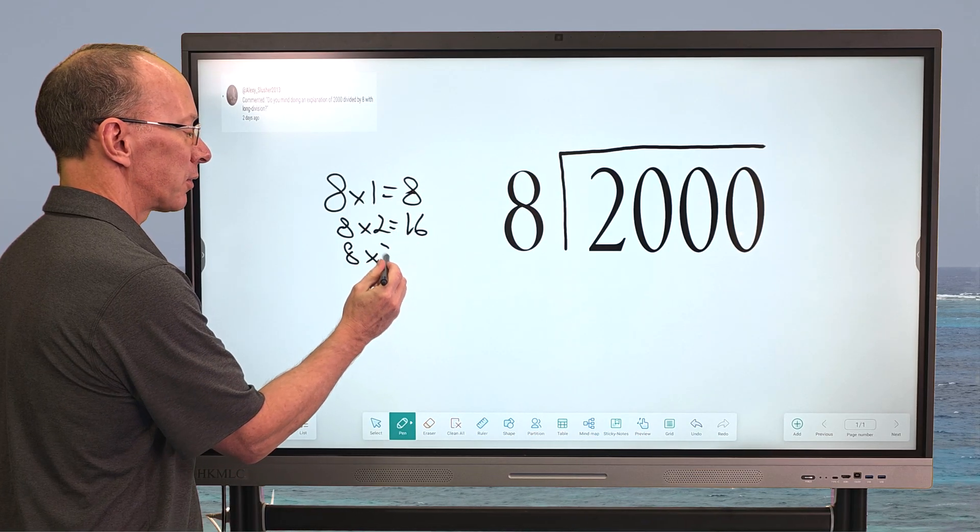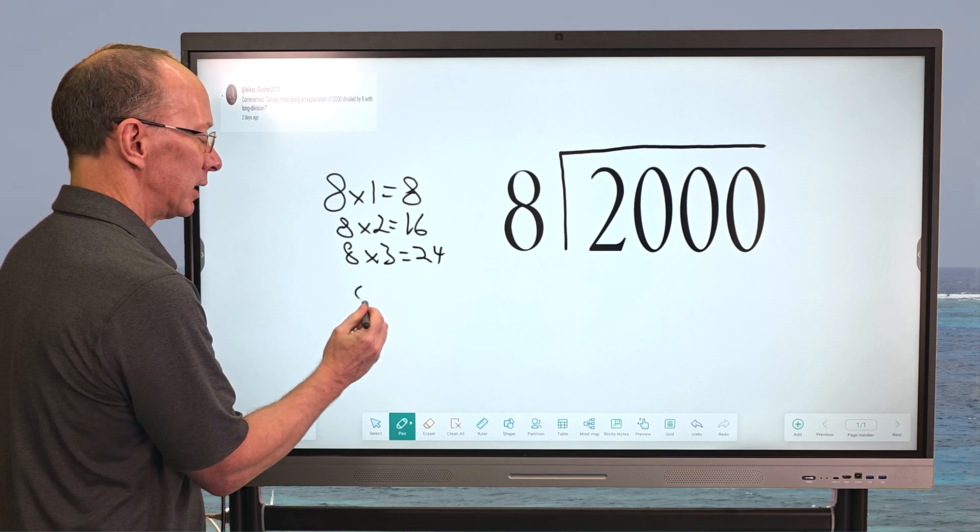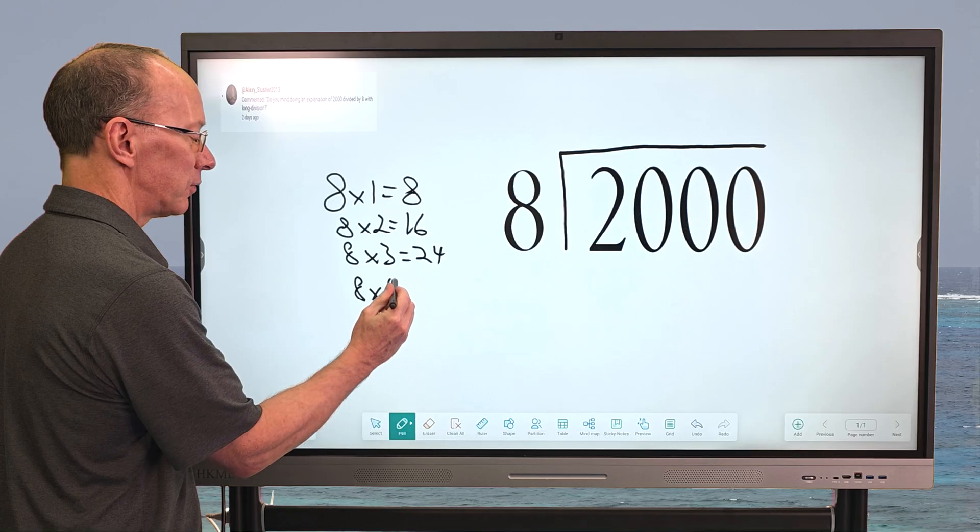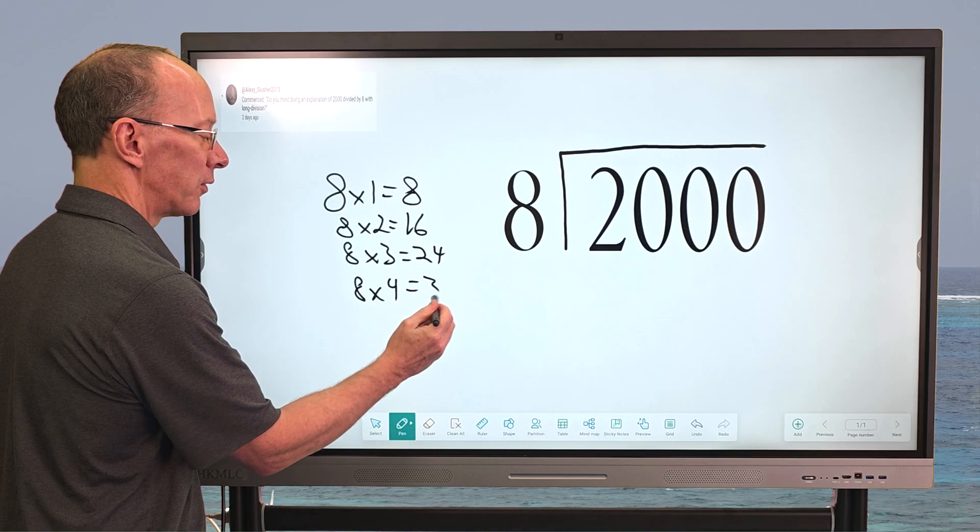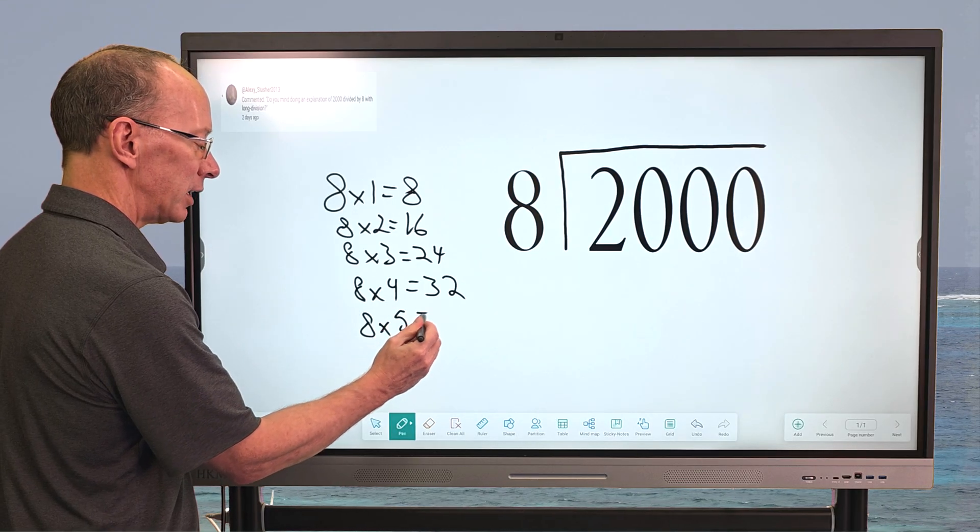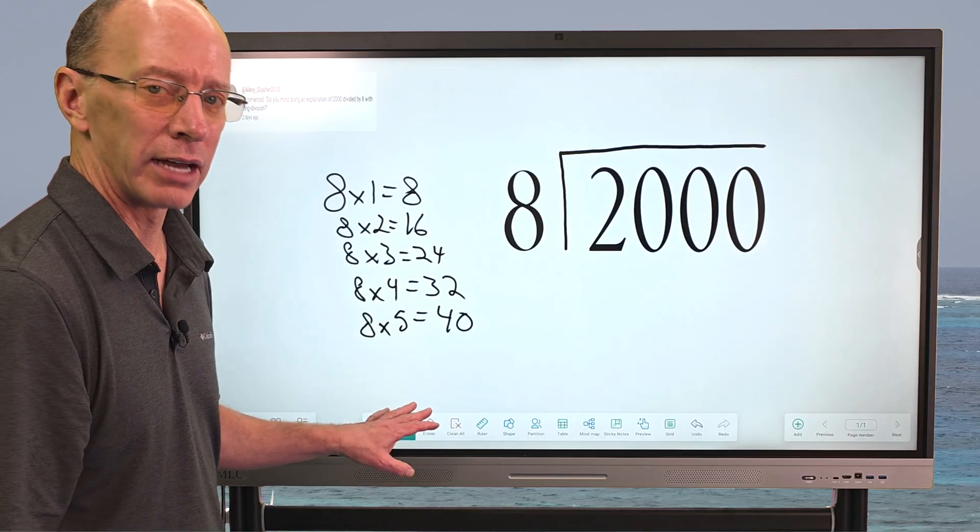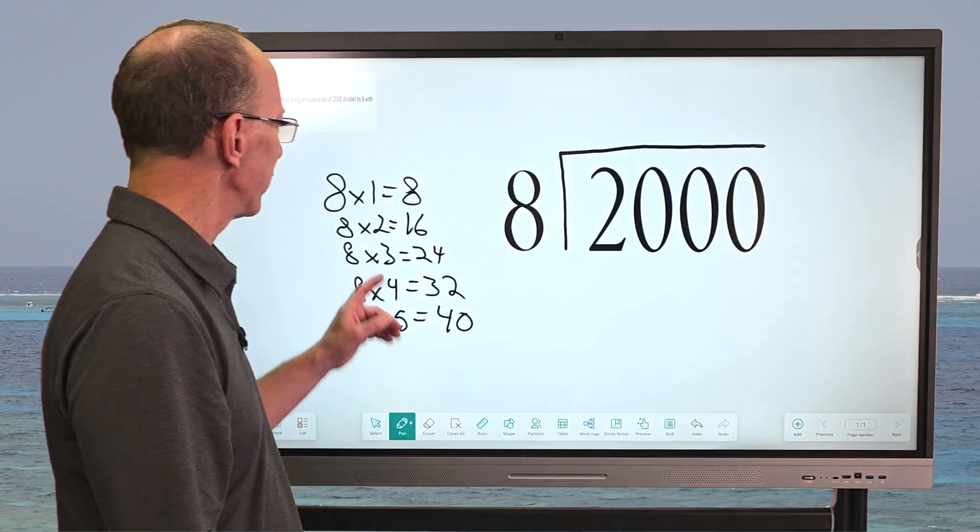8 times 3 equals 24. 8 times 4 equals 32. Let's do just one more here. 8 times 5 equals 40. All right. And if we have to, we can do some more. But for right now, I think we have enough.